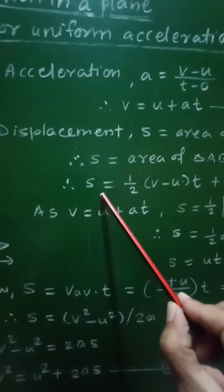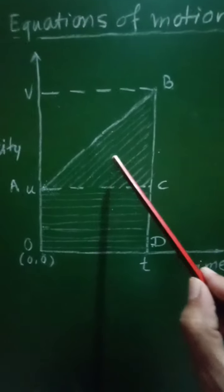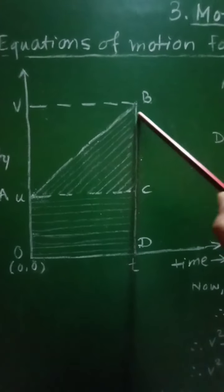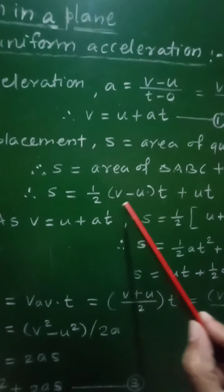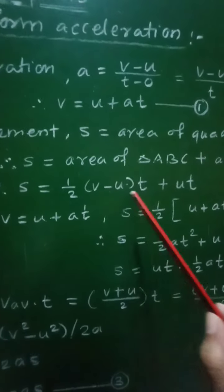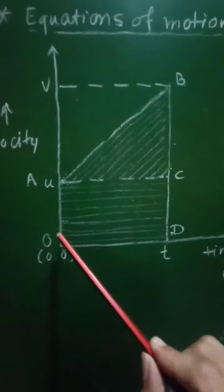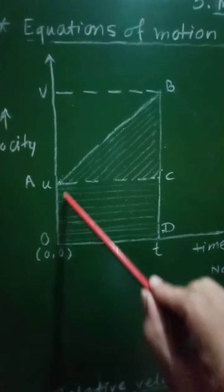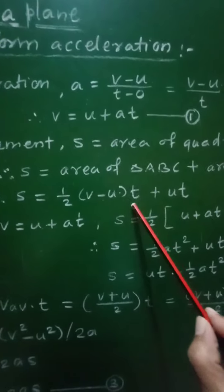We know that the area of a triangle equals half base into height. For this triangle, the base equals t and the height equals v minus u. Therefore, S = half (v minus u) into t, as the base-height term, plus the area of the rectangle. For the rectangle, it is length into breadth — length is t and breadth is u. Therefore, S = half(v minus u)t + ut.